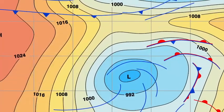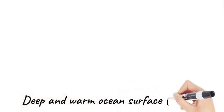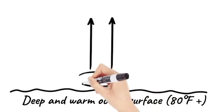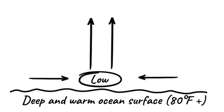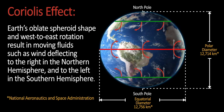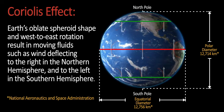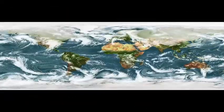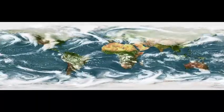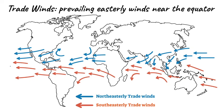Before we explain Buys-Ballot's Law, let's briefly summarize some of the principles involved. A warm ocean surface heats the air. The warm, moist air rises, leaving behind a low-pressure area. Air flows in from high-pressure areas to fill it, creating wind. Earth's oblate spheroid shape and west-to-east rotation result in moving fluids such as wind deflecting to the right in the Northern Hemisphere and to the left in the Southern Hemisphere. This deflection, called the Coriolis effect, causes storms to rotate counterclockwise in the Northern Hemisphere and clockwise in the Southern Hemisphere. Moreover, trade winds steer these rotating storms in a westerly direction.